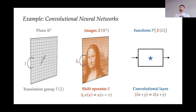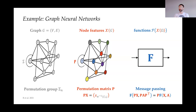The best example is convolutional neural networks applied to images. The underlying domain is a plane or grid on which we define translation symmetry — it acts on images through shifts, and shift-equivariant functions are convolutions. You can derive convolutional neural networks from these first principles of group equivariance. Another prominent example is graph neural networks. The key structural characteristic of a graph is the lack of ordering of nodes, described by the permutation group acting through permutation matrices on node feature vectors. Architectures that learn on graphs implement permutation equivariance through message passing, one of the most popular incarnations of graph neural networks.